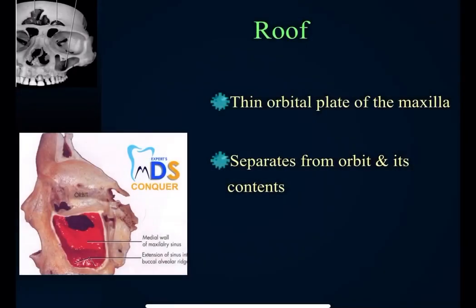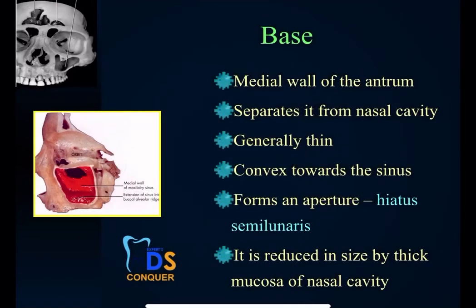The roof is the thin orbital plate of the maxilla, which separates the orbit and its contents from the sinus. The base forms the medial wall of the antrum, separates it from the nasal cavity, is usually thin and convex towards the sinus, and forms an aperture called the hiatus semilunaris, which is reduced in size by the thick mucosa of the nasal cavity.